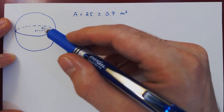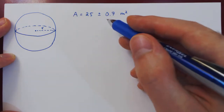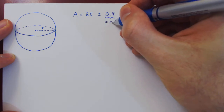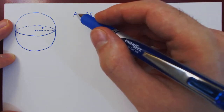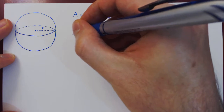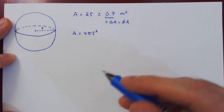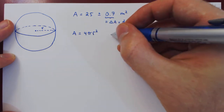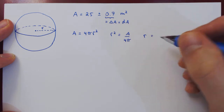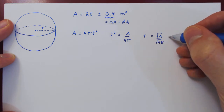We will calculate the radius of the sphere with uncertainty, and then use that to find the volume with uncertainty. The relation between A and the radius is that the surface area of the sphere is 4π times the radius squared. We can isolate for R, so we get R squared as A over 4π.